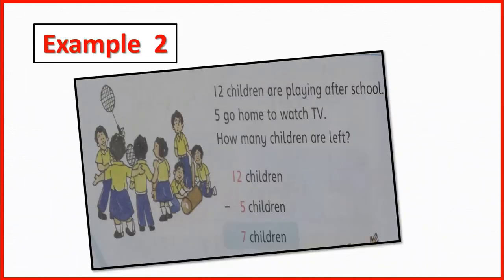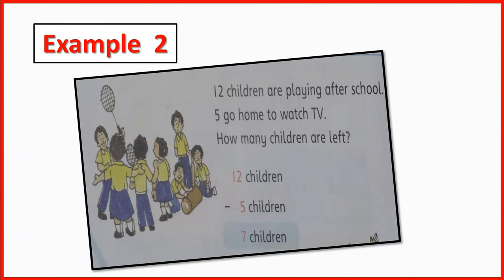Here is another example: 12 children are playing after school. 5 go home to watch TV. How many children are left? 12 children are playing and 5 go home to watch TV. Let's subtract to find how many are left: subtract 5 from 12. 5 go home to watch TV, so how many are left? Yes, 7 children are left. That means 12 minus 5 equals 7.